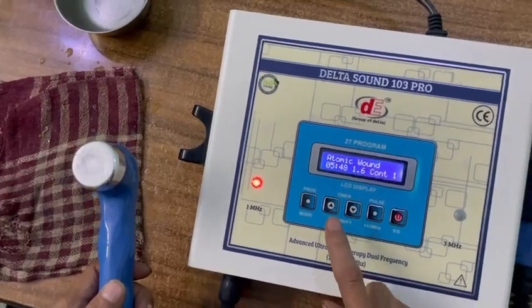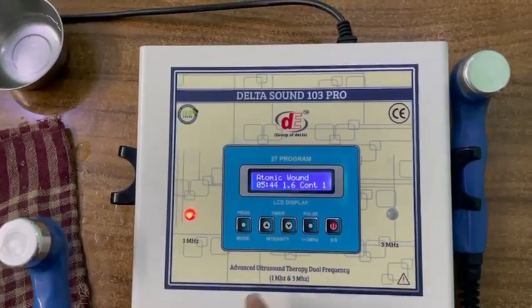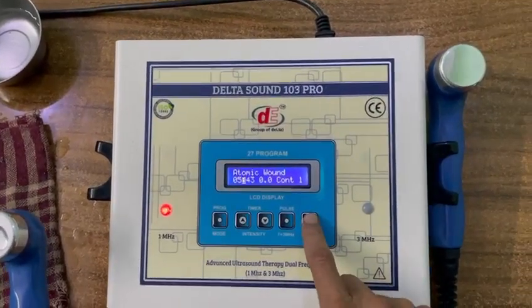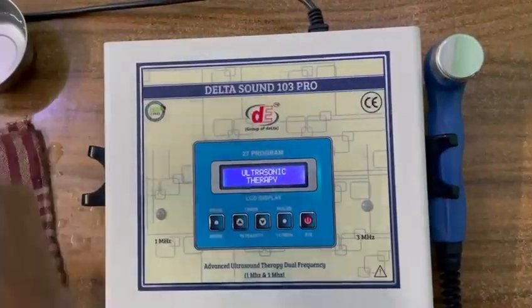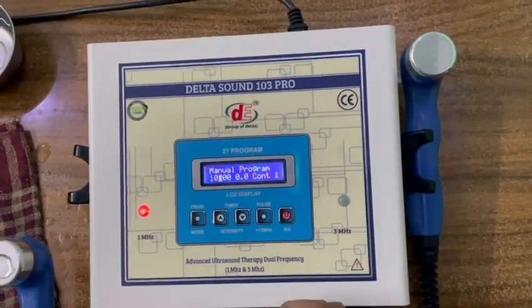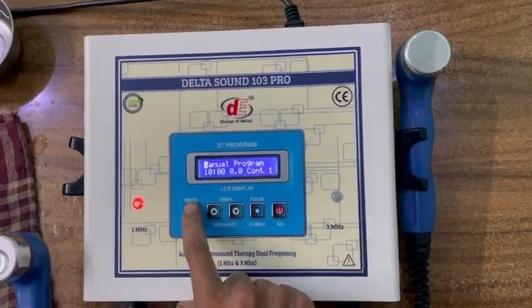Now we want to show how to go for 3 MHz. Stop the machine by pressing the button. Now we want to use in 3 MHz. Press program button one time. Again program button.